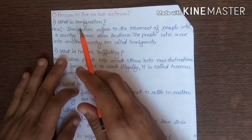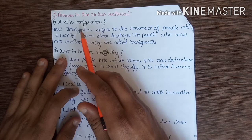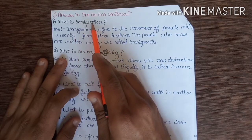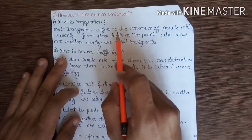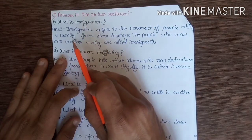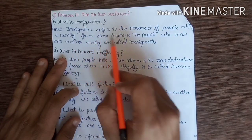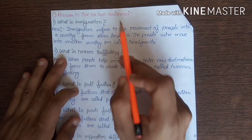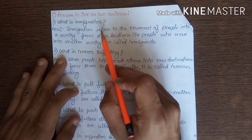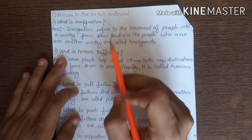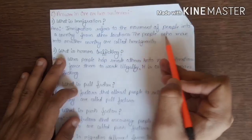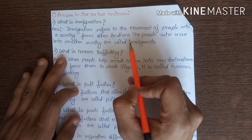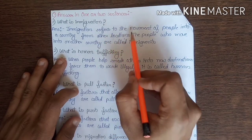Now we will discuss questions related to this lesson. First question: what is immigration? Immigration refers to the movement of people into a country from other locations. For example, if Indians go to the USA, we call that immigration. The people who move into another country are called immigrants.